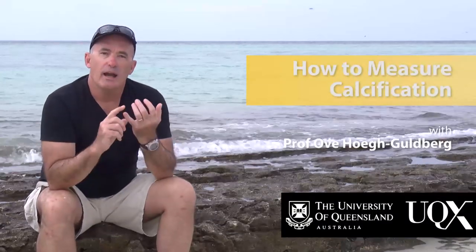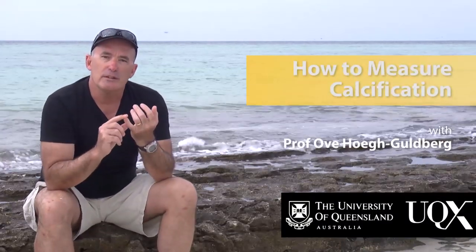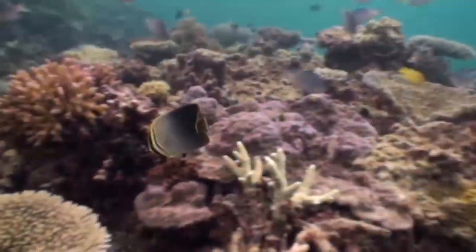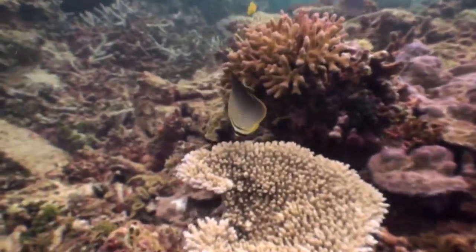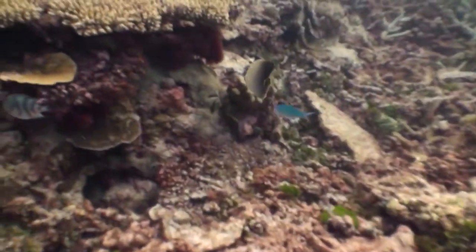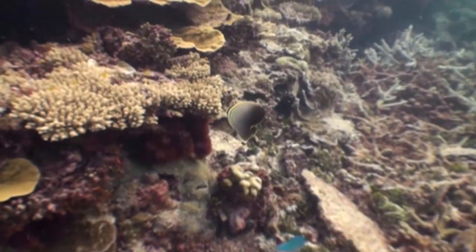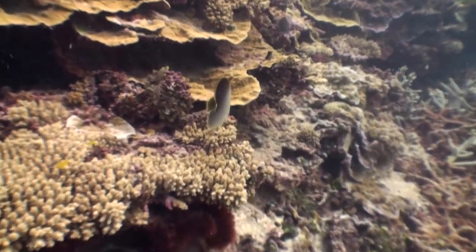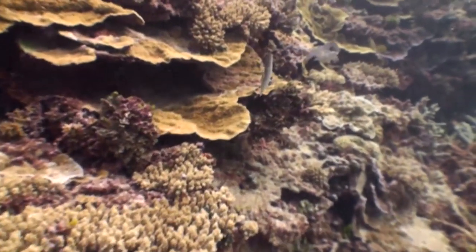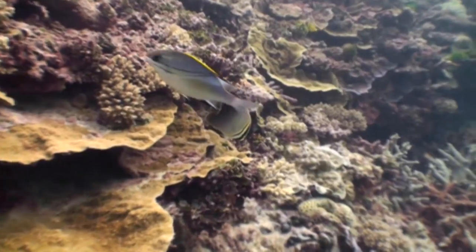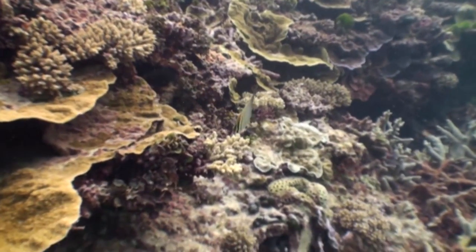Welcome back. As we've learnt, the deposition of calcium carbonate is a critical feature associated with the majority of coral reefs. Healthy coral reefs have a complex three-dimensional framework in which thousands of species find habitat. The framework of coral reefs is primarily generated by reef-building corals, the dead skeletons of which build up over time and are glued together by organisms such as red coralline algae.